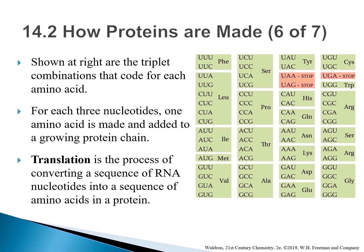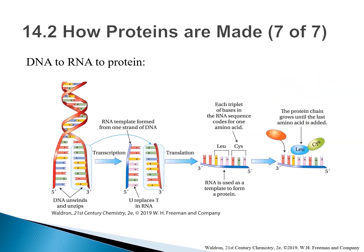This process is called translation, which takes the RNA nucleotides and translates them into amino acids in the protein. As the new protein begins to form, it changes from an unfurled floppy chain into a tightly folded protein. In summary: an unzipped section of DNA is used as a template to create RNA (transcription), then RNA is used as a template to form a protein, with each triplet of bases calling for an amino acid, until the last amino acid is added.